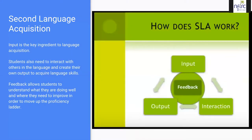We talked about second language acquisition and how it works. Input truly is the key ingredient to language acquisition. Students also need to interact with others in the language and create their own output in order to acquire language skills. These are all interrelated. Feedback is at the middle of the triangle — it allows students to understand where they're doing well and where they need to improve in order to move up the proficiency ladder.